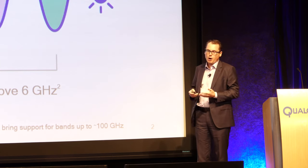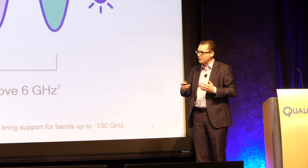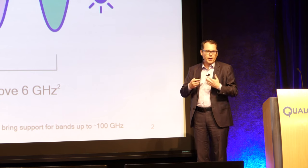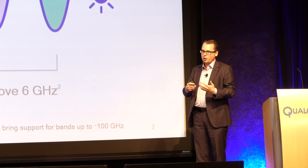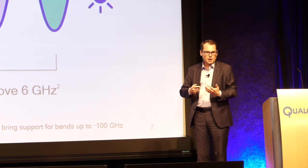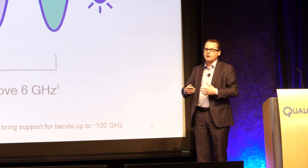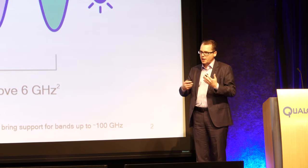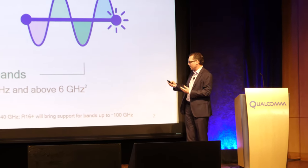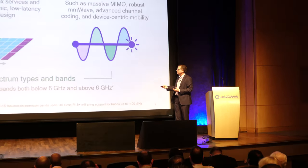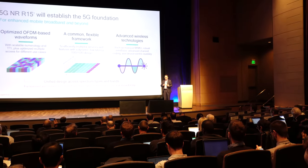One of the key things is that it didn't require a new four-letter acronym. Qualcomm and many other companies are looking at modulation, waveform, and multiplexing — looking at interesting approaches beyond OFDM. At the same time, OFDM was chosen for very good reasons: multiplexing, enabling MIMO, and enabling scheduling on time-frequency grids. So we'll have optimized OFDM-based waveforms, but doing it in a much more integrated way on this common flexible framework.